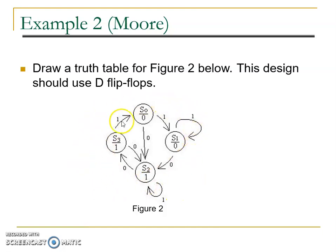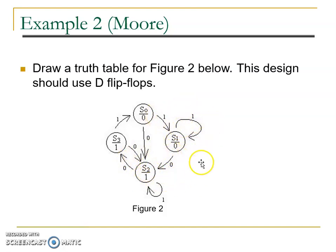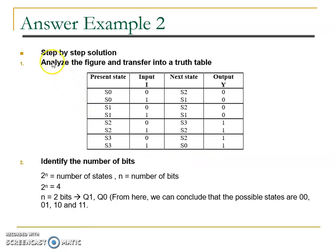The state diagram contains S0, S1, S2, and S3. The output is inside the state diagram, so for sure this is Moore model. Outside is the input. By using a step-by-step solution, analyze the figure and transfer into a truth table.